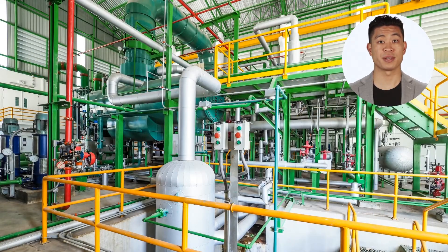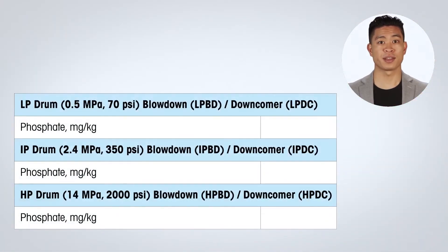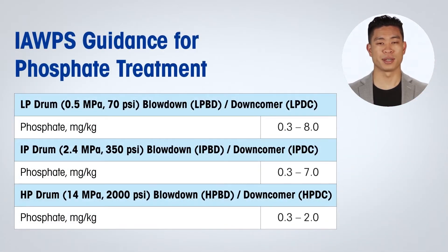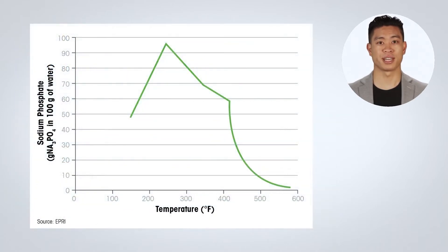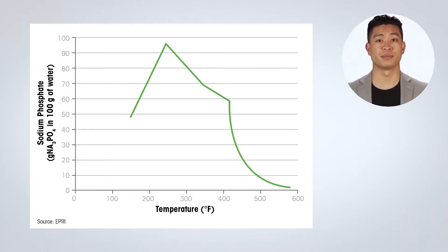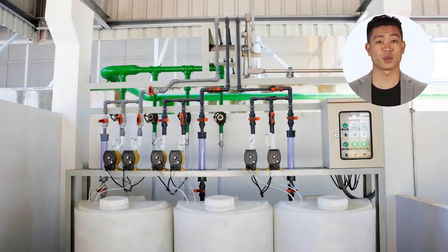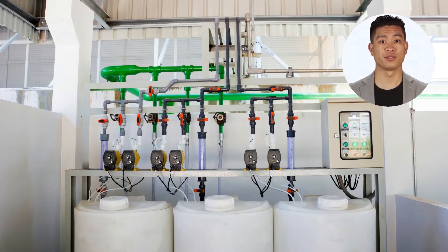Target treatment levels differ based on plant design. However, phosphate levels are typically between 0.3 and 8 ppm in accordance with IOPS guidance. Understanding phosphate levels, including hideout scenarios when solubility is low as a function of temperature, enables reliable control of dosing in boilers while ensuring excessive and often harmful concentrations do not occur.